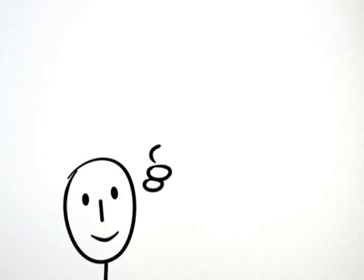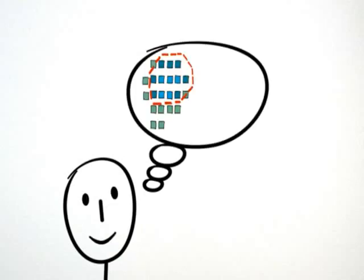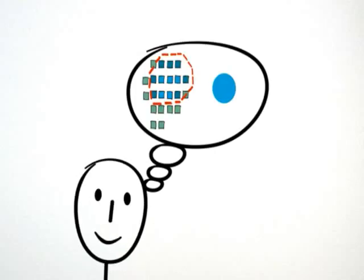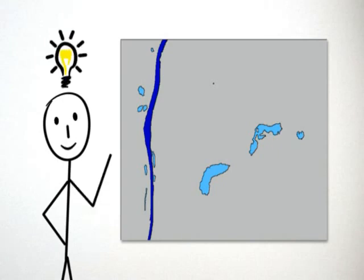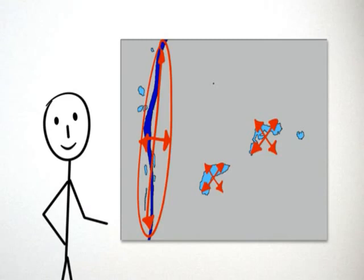Next, you apply the rule that water areas are a bluish color to single out water areas. Another step which is done subconsciously: adjacent objects of the same class are again automatically perceived as one entity. Now, with a final rule, you're able to differentiate rivers from lakes based on the fact that rivers are very long and thin objects, in contrast to lakes, which are usually rather compact.